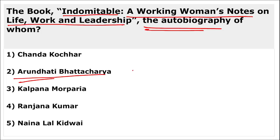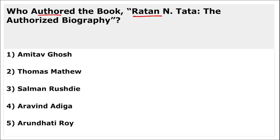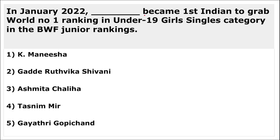The book 'Ratan N. Tata: The Authorized Biography' was authored by Thomas Matthew. Tasneem Mir became the first Indian to grab the world number one ranking in the under-19 girls' singles category in the BWF Junior Rankings — highly important.